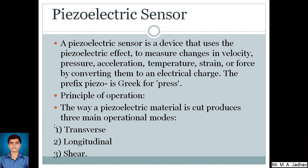The next type of sensor is piezoelectric sensor. A piezoelectric sensor is a device that uses the piezoelectric effect to measure changes in velocity, pressure, acceleration, temperature, strain or force by converting them to an electric charge. The prefix piezo in Greek is for press. So we can see here that piezoelectric sensor is used for measurement of different types of quantities. Many quantities can be measured with the help of piezoelectric sensor, and we have already gone through the principle of working of piezoelectric sensor in pressure sensors also.